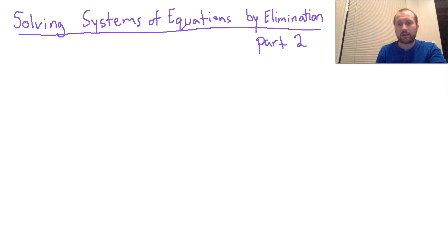So what if that's not the case? The simplest example would be something like this. What if I had x plus 2y equals 7, and then x plus 3y equals 9?